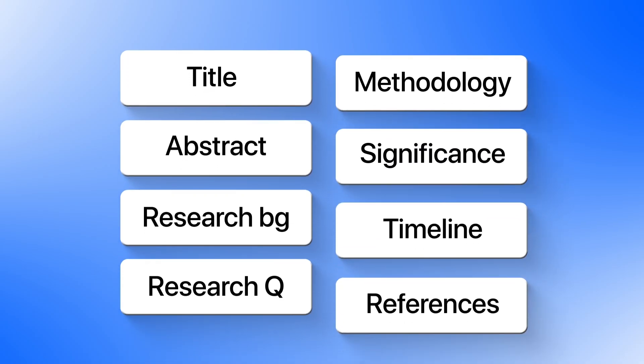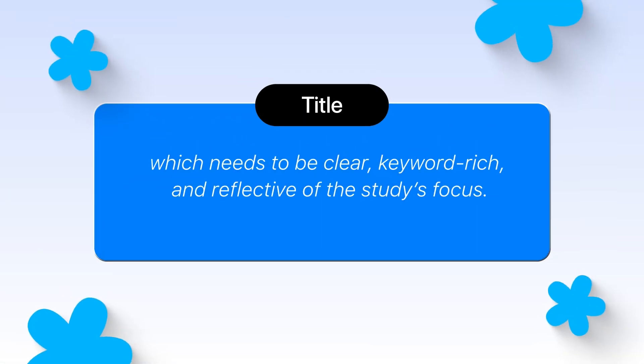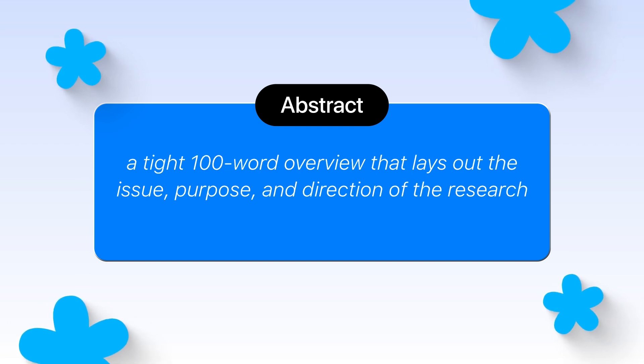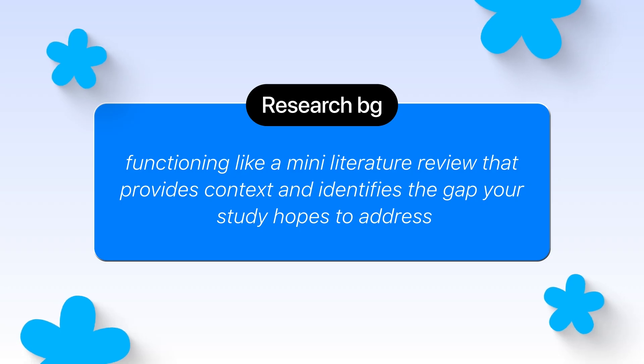A standard academic proposal is made up of eight core sections. It starts with a title, which needs to be clear, keyword-rich and reflective of the study's focus. Then there's the abstract, a tight 100-word overview that lays out the issue, purpose, and direction of the research. The research background follows, functioning like a mini literature review that provides context and identifies the gap your study hopes to address.